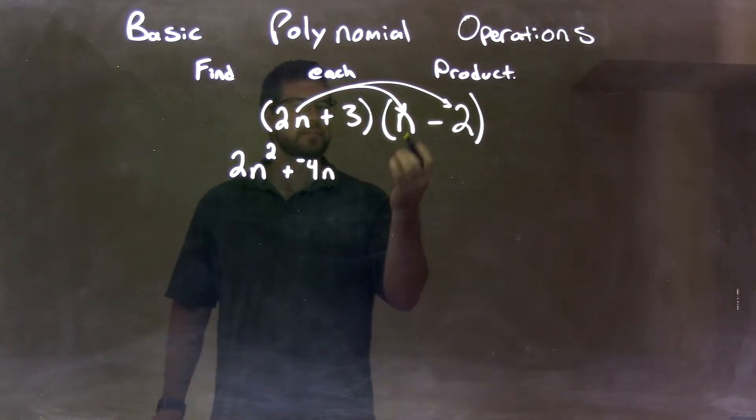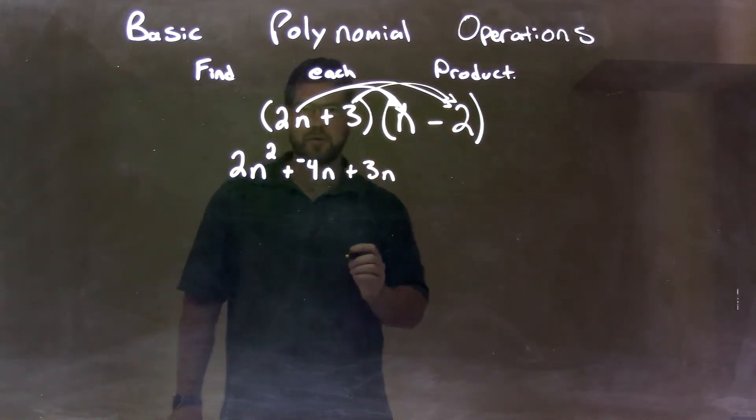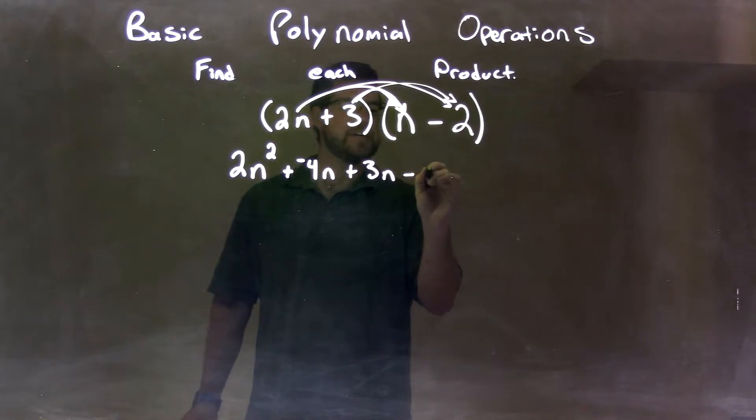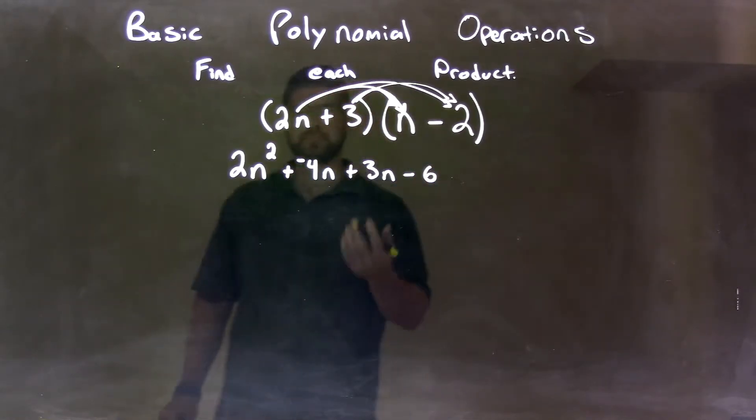Then we continue that, or we finish the 2n being multiplied to both parts, so now we can deal with 3. So 3 times n is just 3n, and 3 times a negative 2 is a negative 6, or plus a negative 6, however you want to see it.